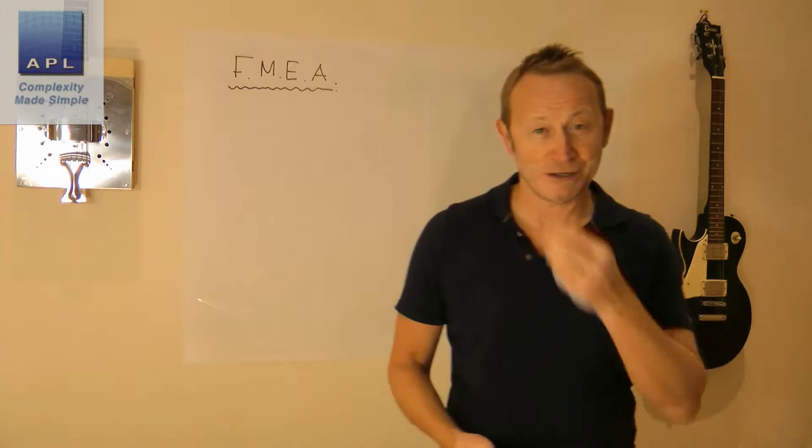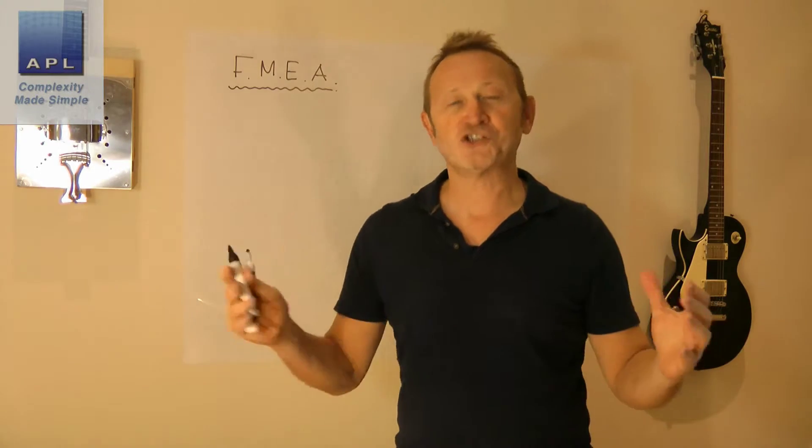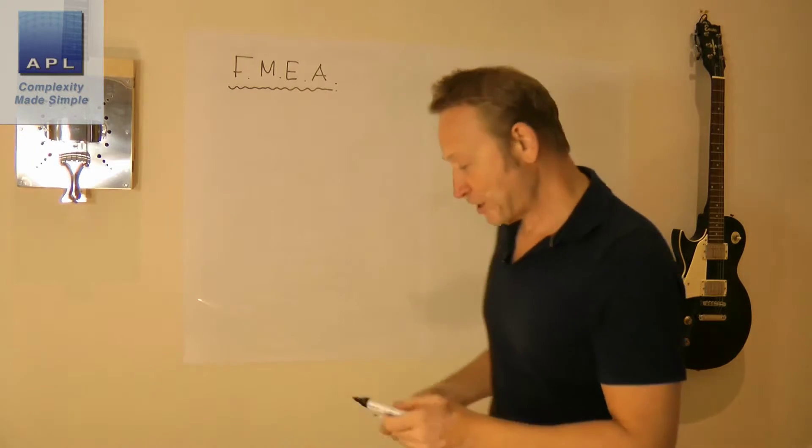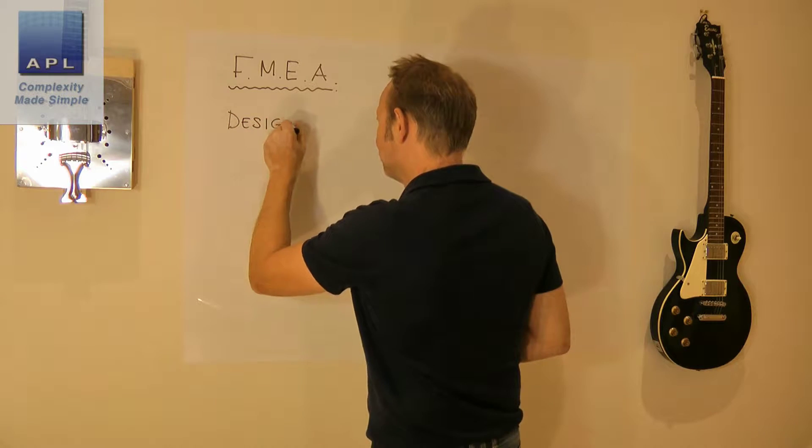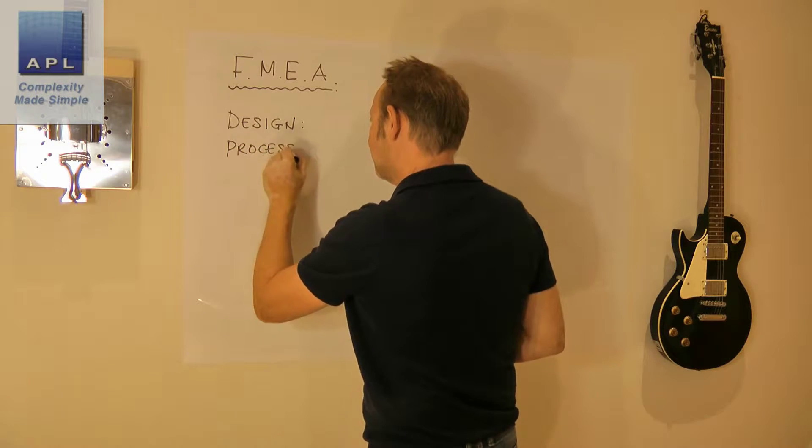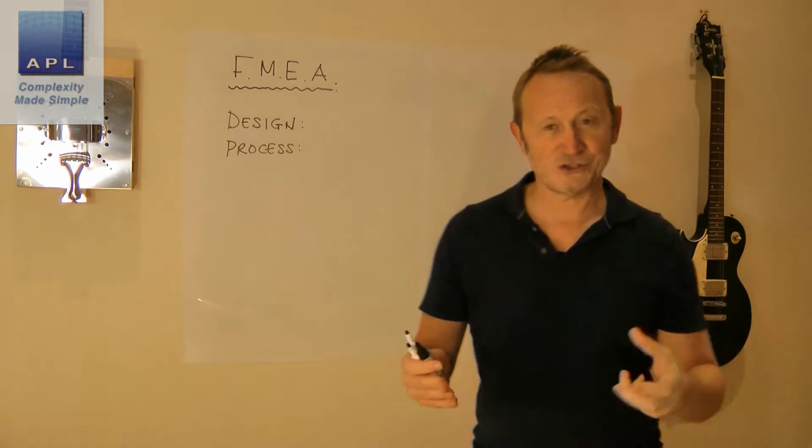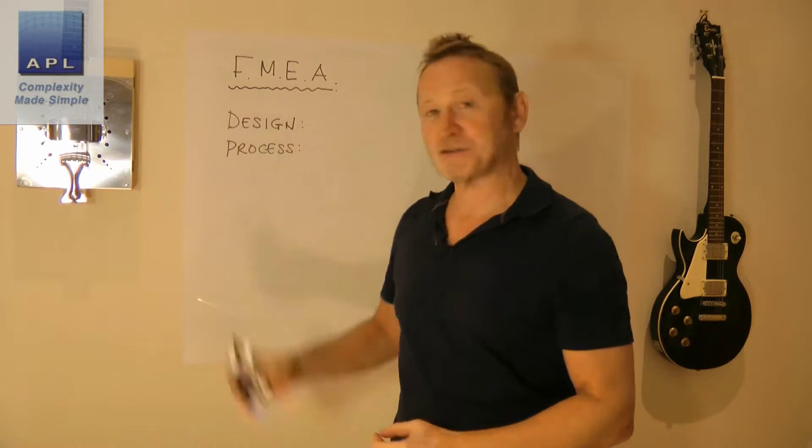We're going to take a look at FMEA and in particular what FMEA is supposed to achieve as a generality, not necessarily the detail of the FMEA, that's for another video. We're going to look at the two styles of FMEA: there's a design FMEA and there is a process FMEA. We're going to take a look at these two techniques and see what they're supposed to do to give you high fidelity control at the production level and make sure that you please the customer. That's what these two things are designed to do.